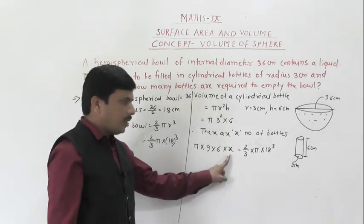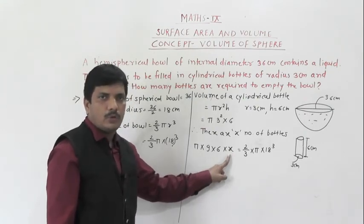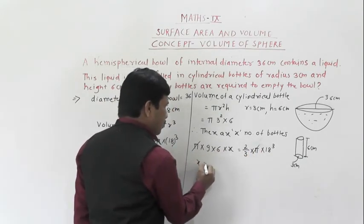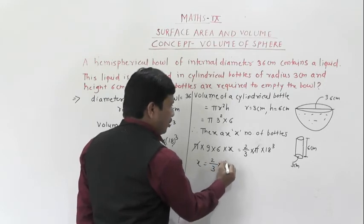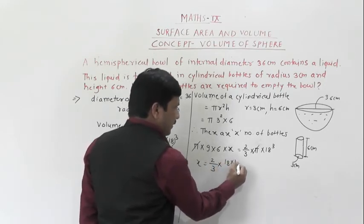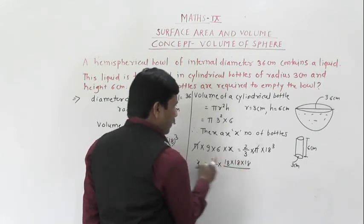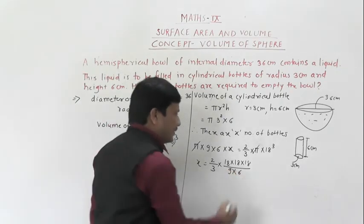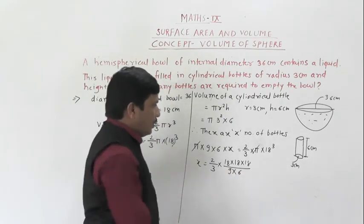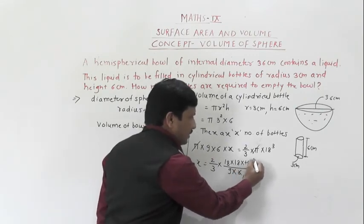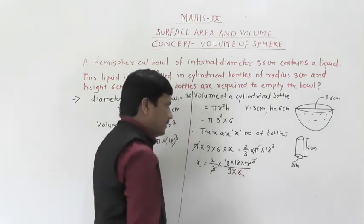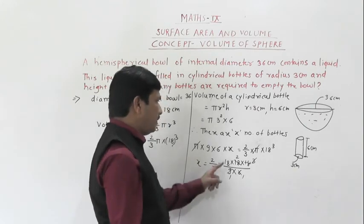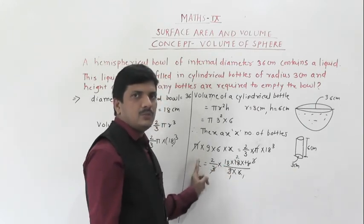Setting up the equation: π × 9 × 6 × x = 2/3 × π × 18³. We cancel π from both sides. Then x = (2/3 × 18 × 18 × 18) / (9 × 6). Here 18 is divisible by 9, giving 2. Then 3 and 3 cancel. After simplification: 18 × 2 = 36, and 36 × 2 = 72.